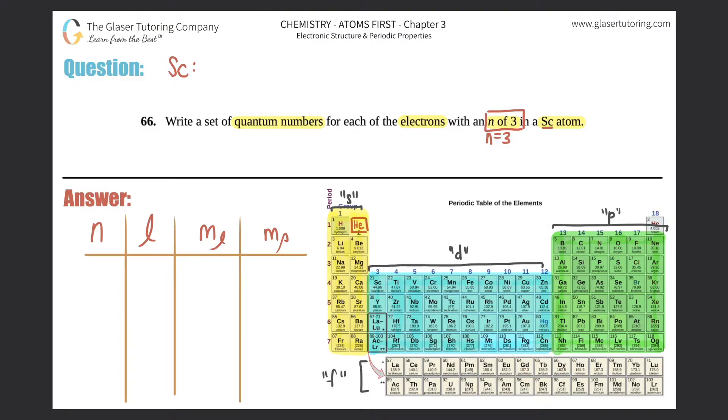Remember by now that the s always starts with 1, so 1s. The p's start with 2, so 2p. The d's start with 3, so 3d. And the f starts with 4, so 4f. Always got to start with 1, aka hydrogen, and go along your merry way until you get to scandium, which is right here.